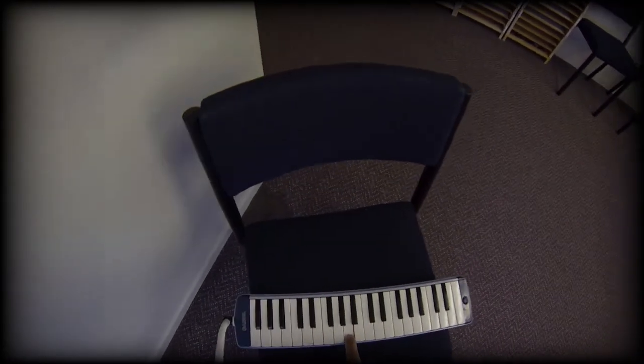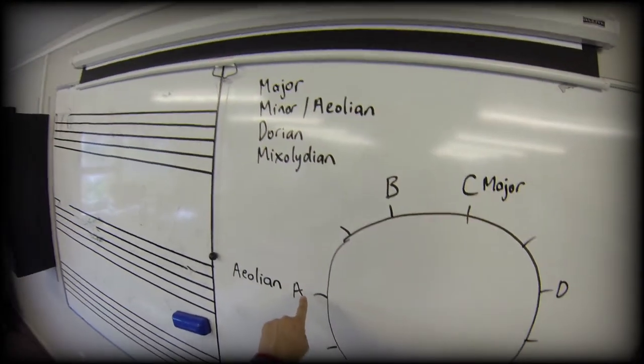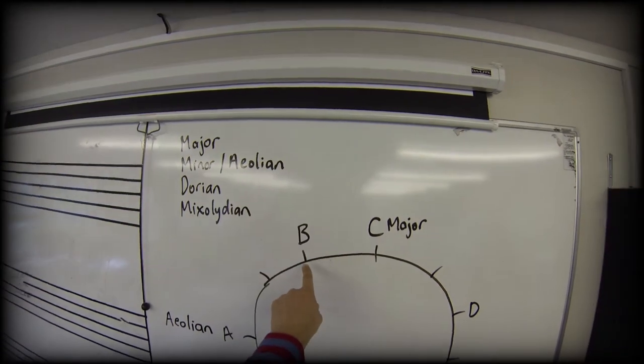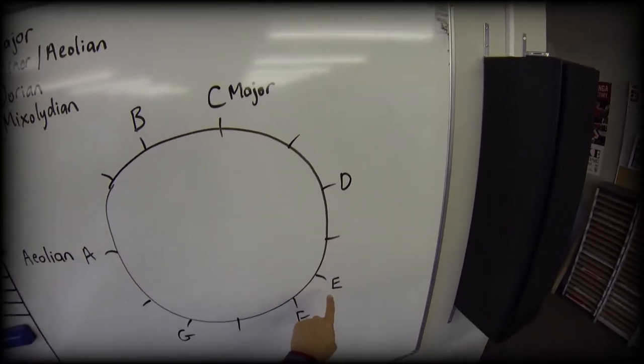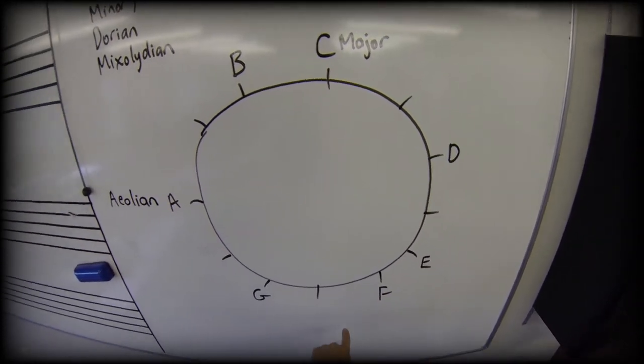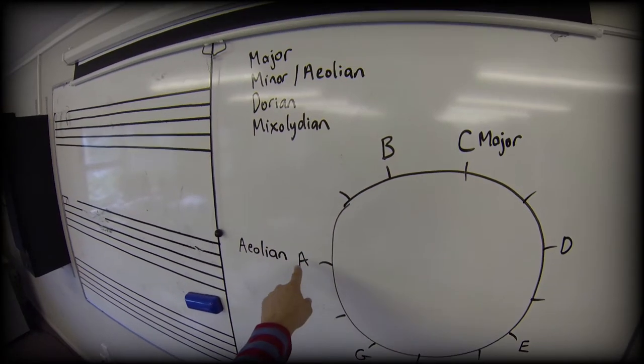Let's look at the step pattern for that. I'll just reset my A. A root, two, one, two, two, one, two, two.